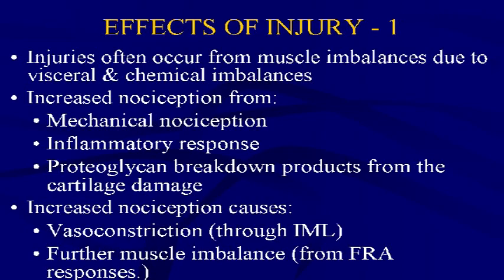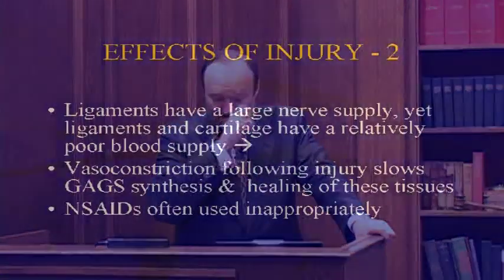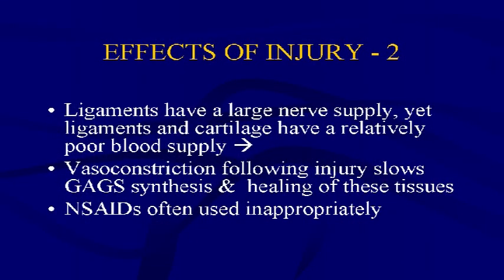The increased nociception causes local vasoconstriction through the intermediolateral cell column and further muscle imbalances from flexion-relaxation responses. For healing to take place we want to remove that vasoconstriction and eliminate nociception. Vasoconstriction is beneficial at the initial injury to prevent blood loss, but then we need circulation to return for healing.